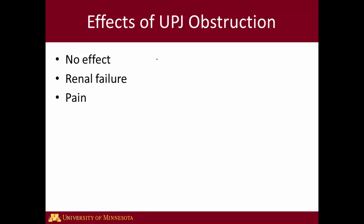Now when we look at the effects of UPJ obstruction, there are a number of possibilities. It may have no effect at all, it may cause renal failure or decreased kidney function, or it may cause pain. If there's no effect, often people don't even know that UPJ obstruction is present. But if they tend to have pain especially, or if there's decreased renal function, then the negative effects of UPJ obstruction are apparent, and this is what leads to treatment. Thank you very much for listening to this discussion of UPJ obstruction.